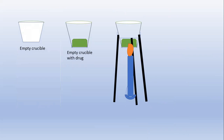Then heat that crucible and the drug on a Bunsen burner on a blue color flame. Note that the blue color flame — just like your gas stove — the blue color flame is utilized where the heat is maximum. Heat that particular drug unless and until ash is formed. Ash means a gray color material with not a single particle of black color remaining.